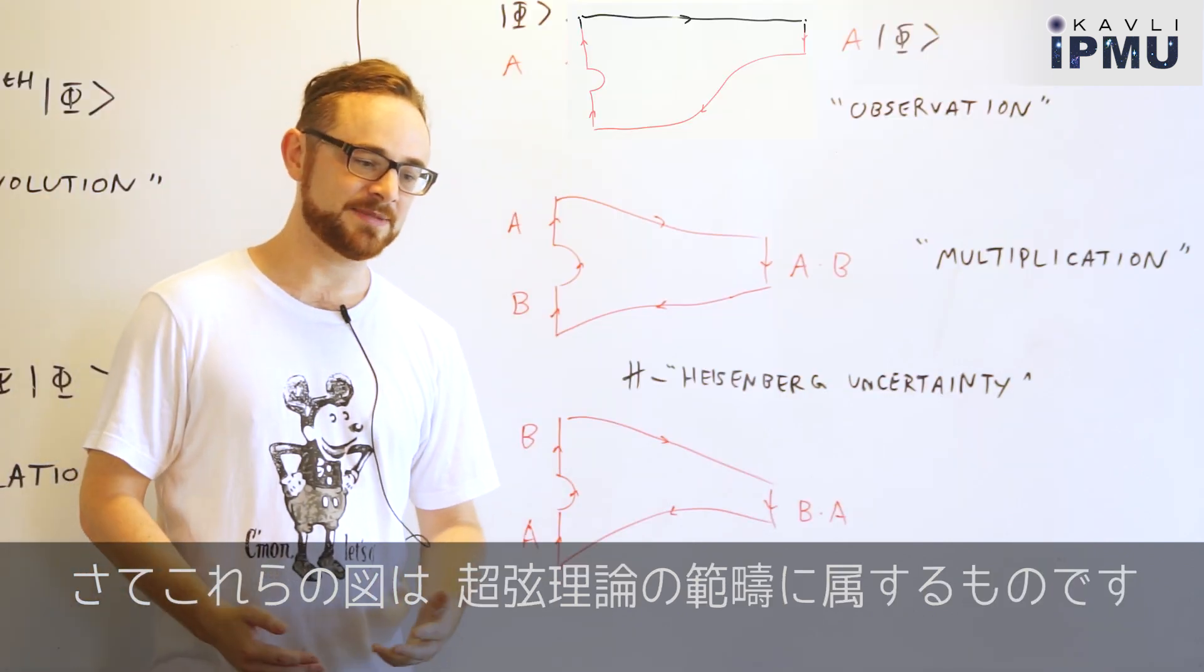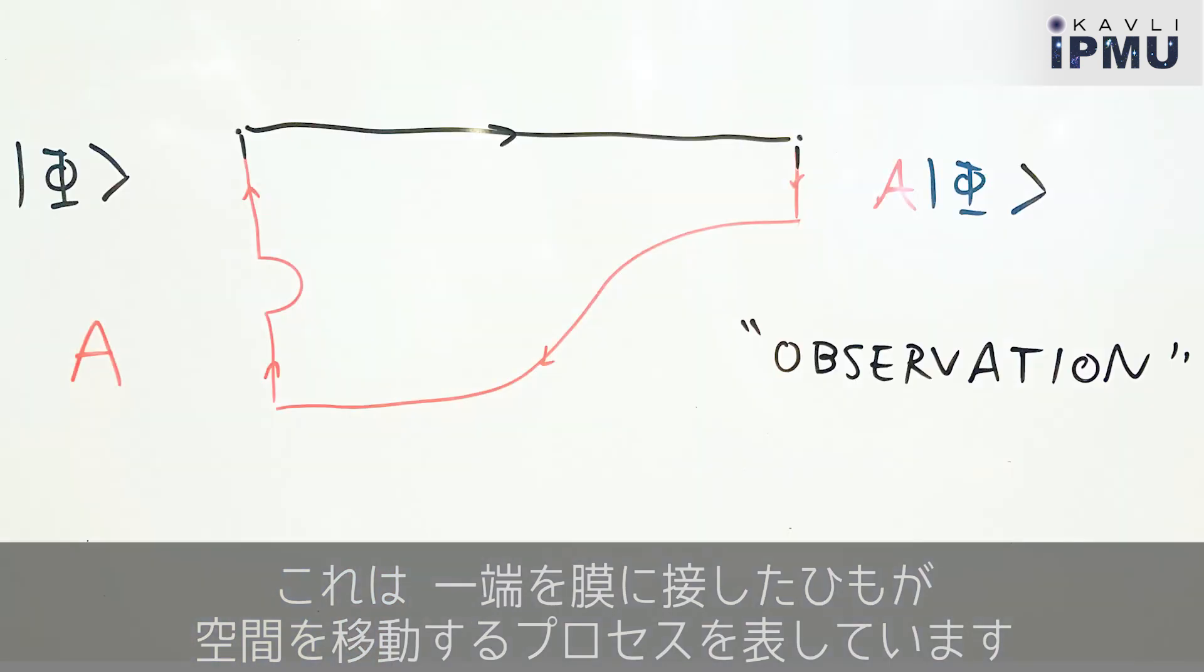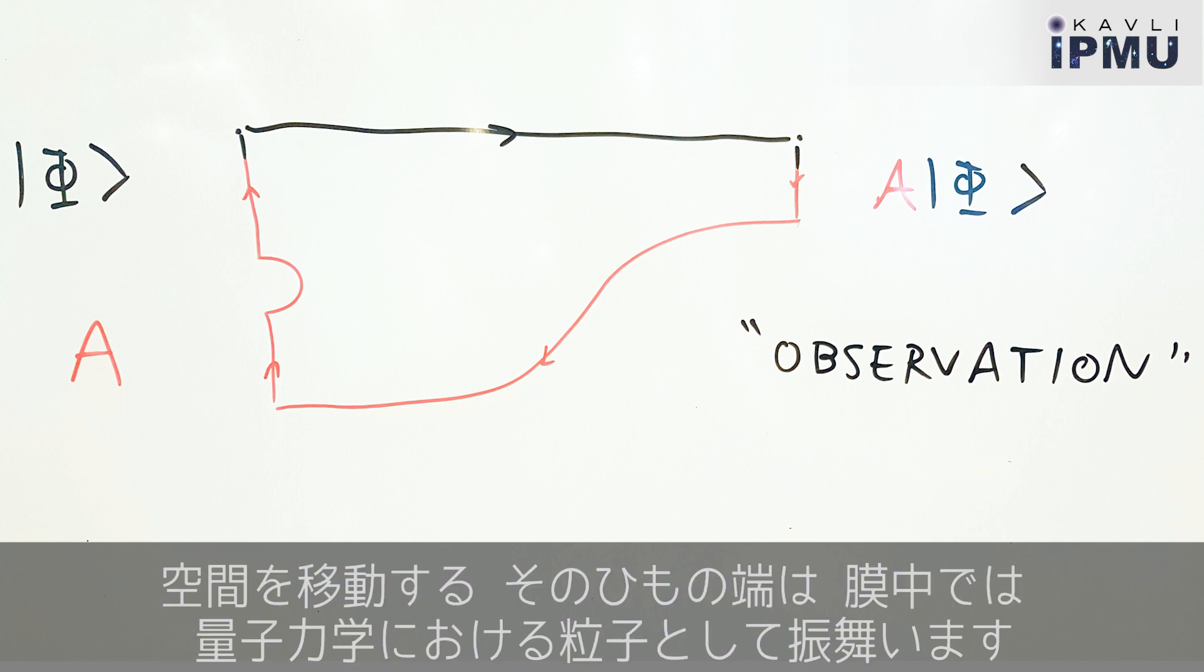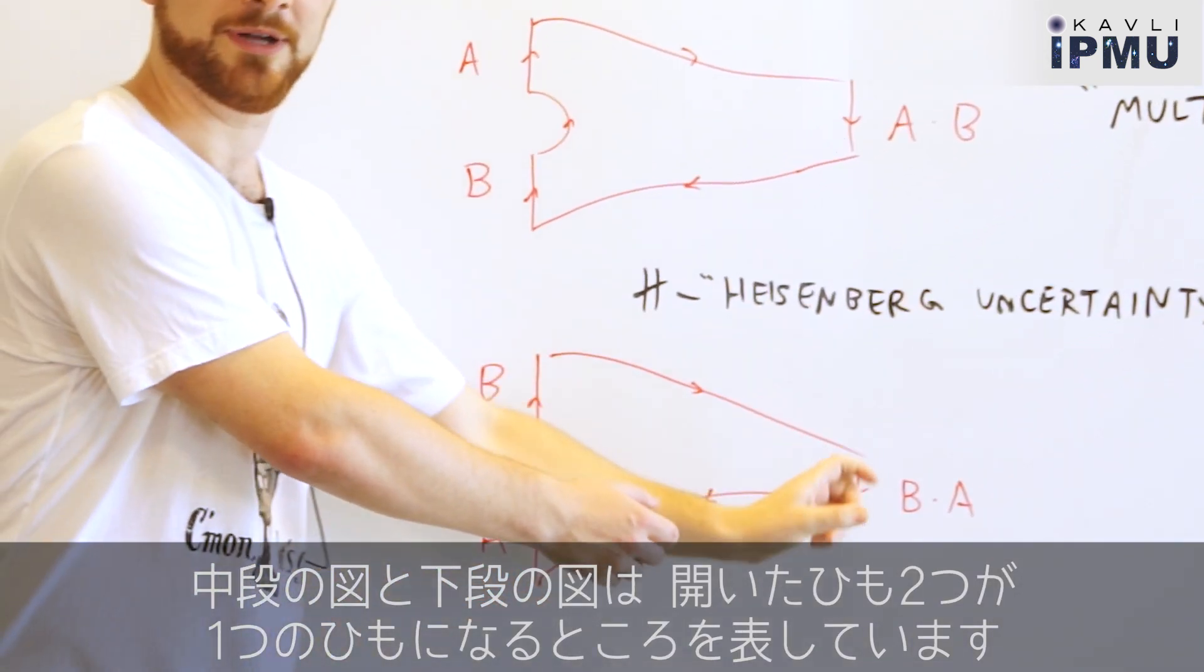Now these pictures belong to string theory. This one depicts a string with one end attached to some membrane moving through space, and inside the membrane that end moving around behaves as a particle in quantum mechanics. And in this picture and this picture we see two free strings merging into one.